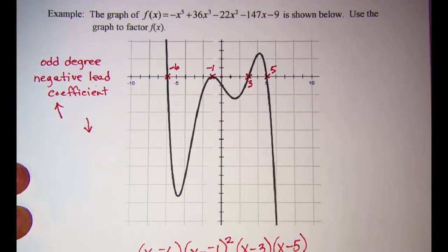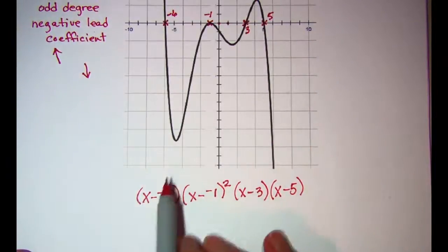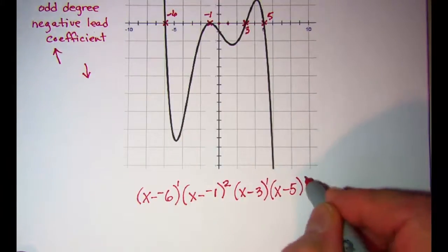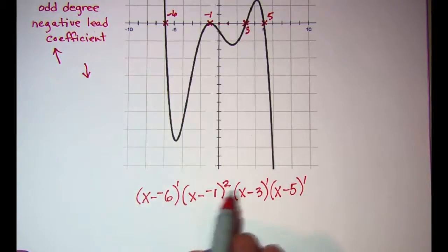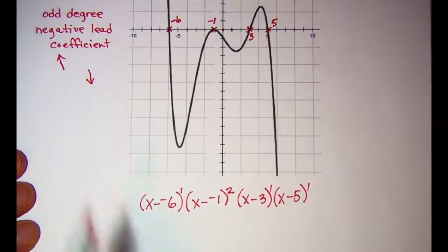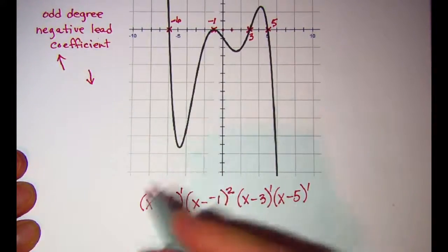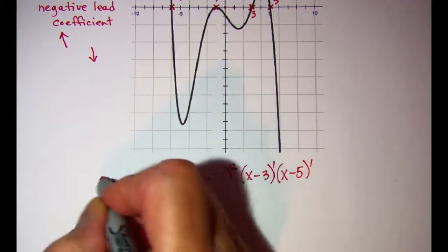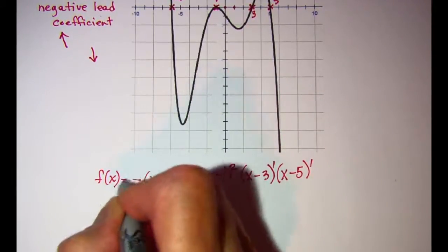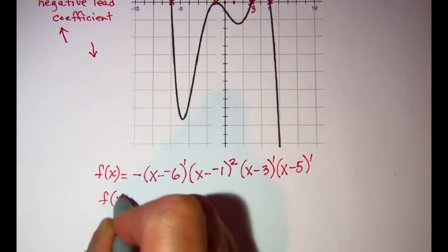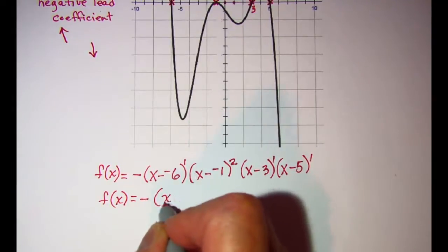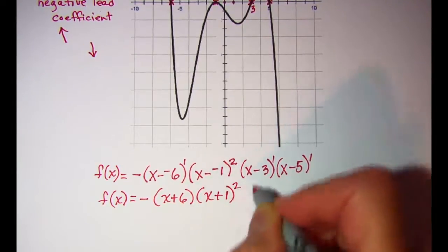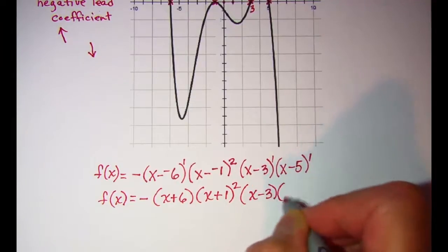For this zero I'm going to have a factor of x minus three, and since it cuts through the axis that'll be to an odd power. This one also cuts through the axis so I have an odd exponent and it'll be x minus five. If I leave these factors as they are we have a count of five, so this is my fifth degree polynomial as it is. Remember that I had a negative lead coefficient of negative one, so I'll put my negative here. That gives f of x equals negative x plus six, times x plus one quantity squared, times x minus three, times x minus five.